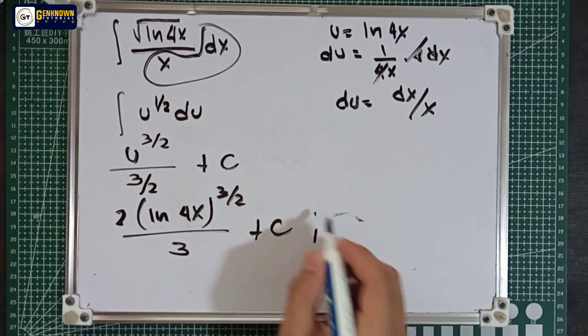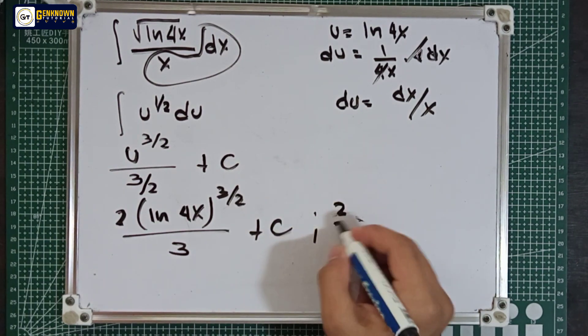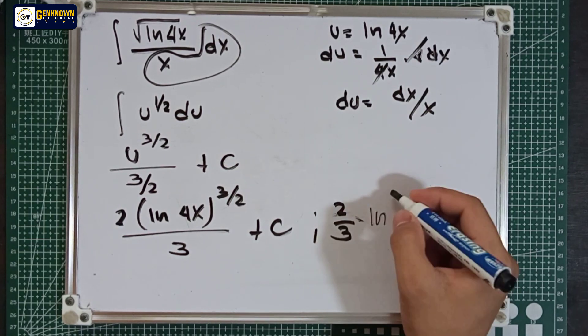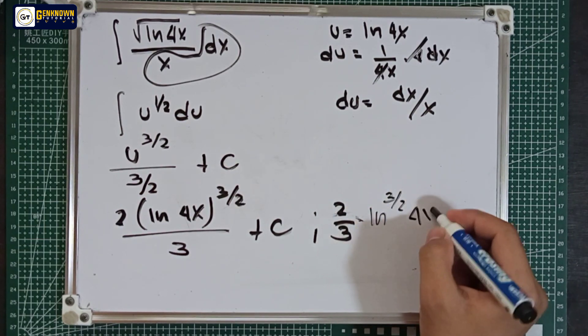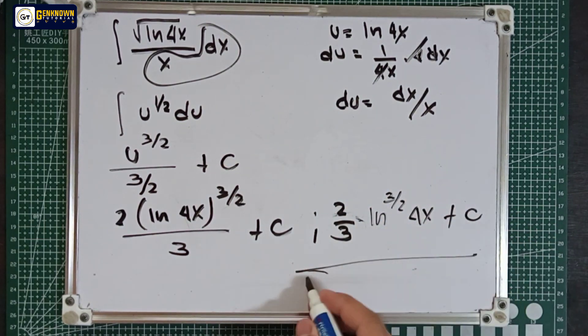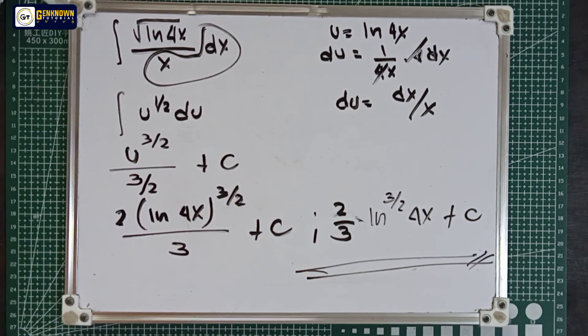Or we can write 2 over 3 multiplied by ln 4x raised to 3 over 2, plus the constant. This is the final answer for number 8.